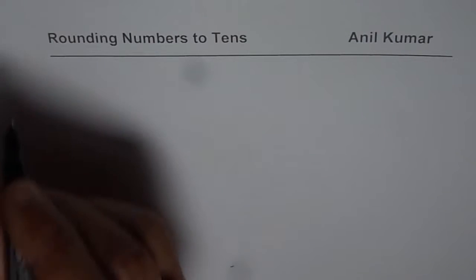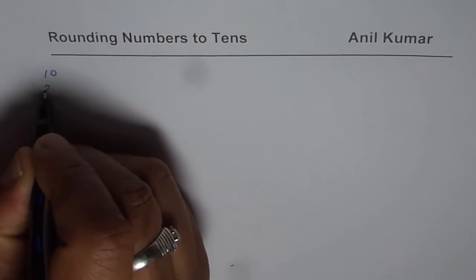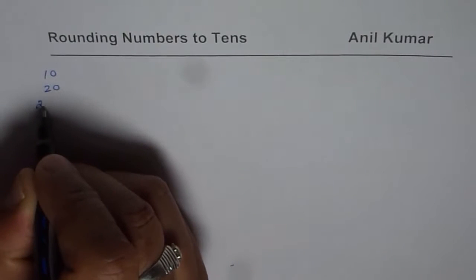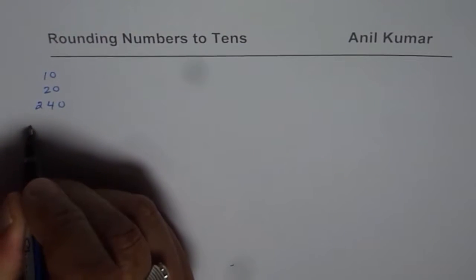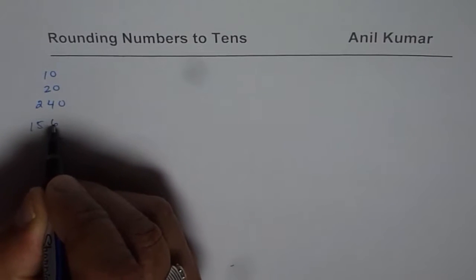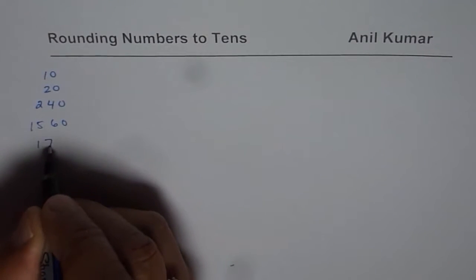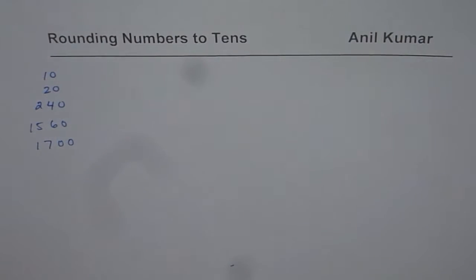You get tens, right? So you could get numbers like 10, you could get 20, you could get 240. These are all tens. You could get 1560, you may even get 1700. So these are all the numbers which you could get when you round to tens.